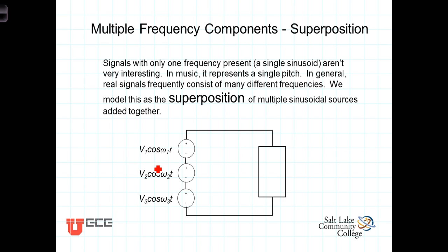Signals with only one frequency present — a single sinusoid — aren't particularly interesting. In music, a single frequency represents a single tone or pitch. In general, real signals frequently consist of many different frequencies all existing concurrently or simultaneously. To model this, we can think of it as a superposition of multiple sinusoidal sources all added together.